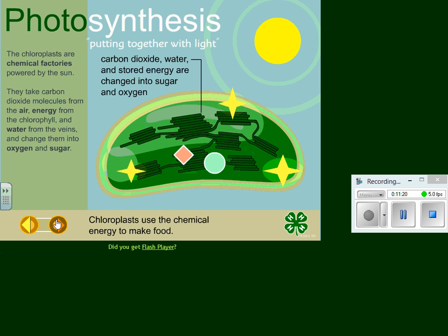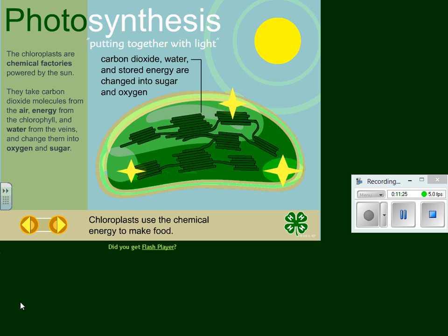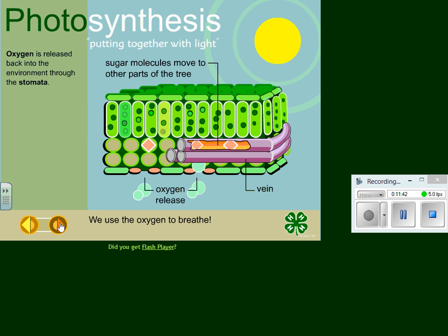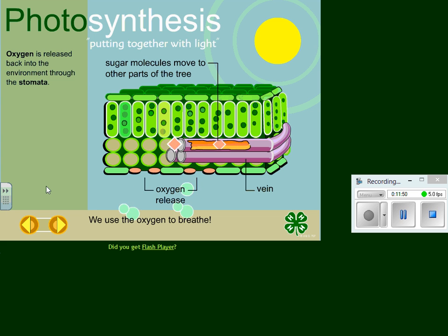The cells take carbon dioxide molecules from the air, energy from the chlorophyll, and water from the veins, and change them into oxygen and sugar. This is why you need to eat your vegetables and fruits — this is where you get your natural source of sugar for good energy, not the kind that makes you tired later. Oxygen is released as a byproduct.